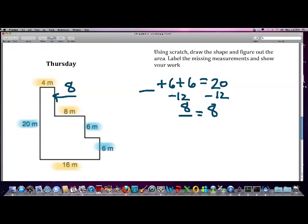And then for the horizontals, we have 4 plus 8 plus blank is equal to 16. And so if we subtract 12 from both sides of the equation, then we get blank is equal to 4.